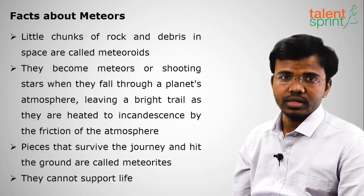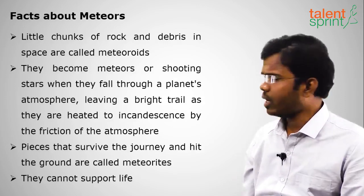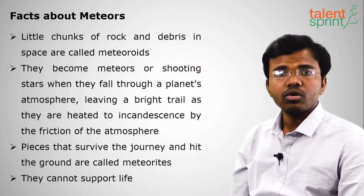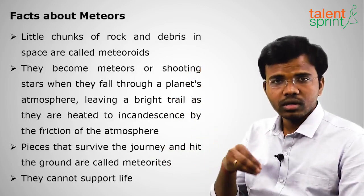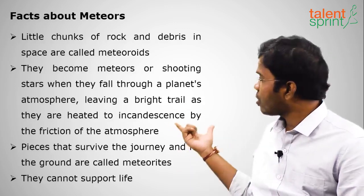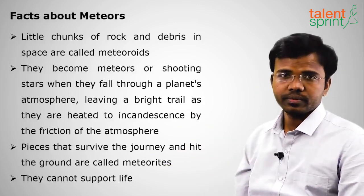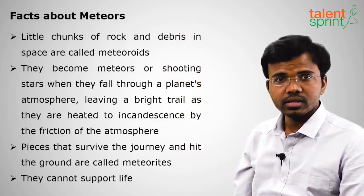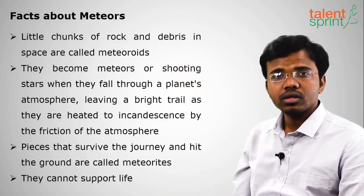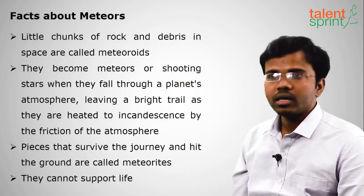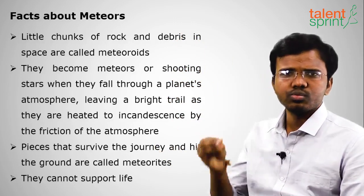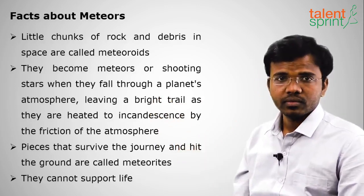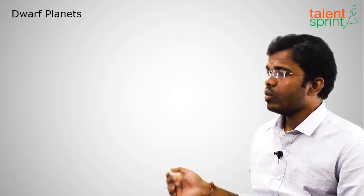Only some meteors or shooting stars will reach and hit the ground of the planet. When they reach the surface of the planet, they are called meteorites. So: first they are meteoroids, then when they enter the atmosphere they are called meteors or shooting stars, and when they hit the ground they are called meteorites. They are rocks of debris moving from space towards the planet and cannot support life.